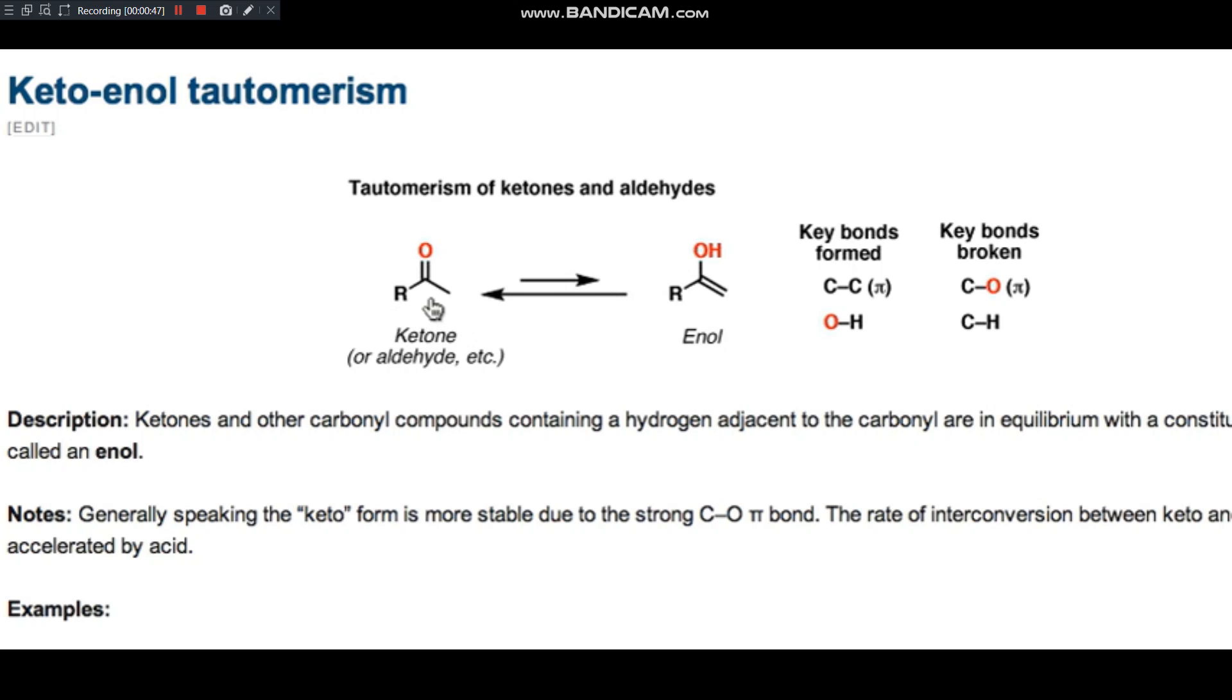We have a molecule on the left just converting to a molecule on the right. And what's interesting about this is this molecule on the left, if you count the atoms that you have, and you look at the molecule on the right and you count the atoms that it has, you realize that they'll actually have the same molecular formula. That is that they are isomers of each other. So one isomer on the left is converting to an isomer of this molecule on the right. And this is the reaction we call tautomerism.